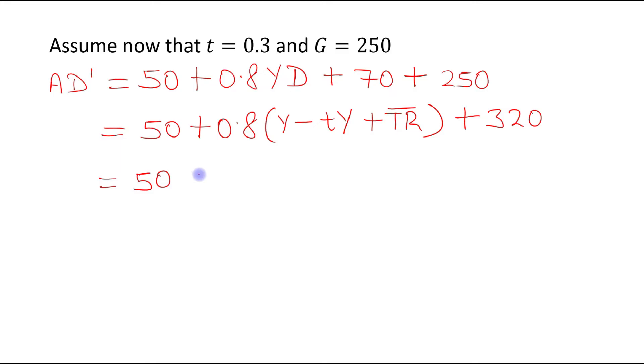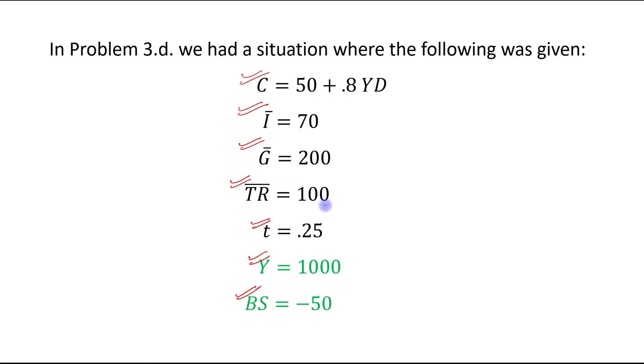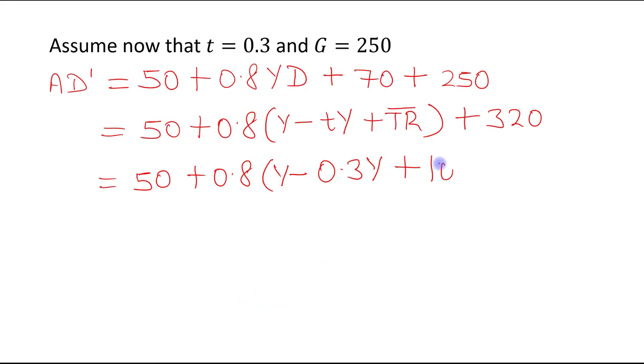Next step: 50 + 0.8YD. YD is Y minus tY plus TR, so 50 + 0.8(Y - tY + TR) + 70 + 250 = 320. Then 50 + 0.8(Y - 0.3Y + 100) + 320.